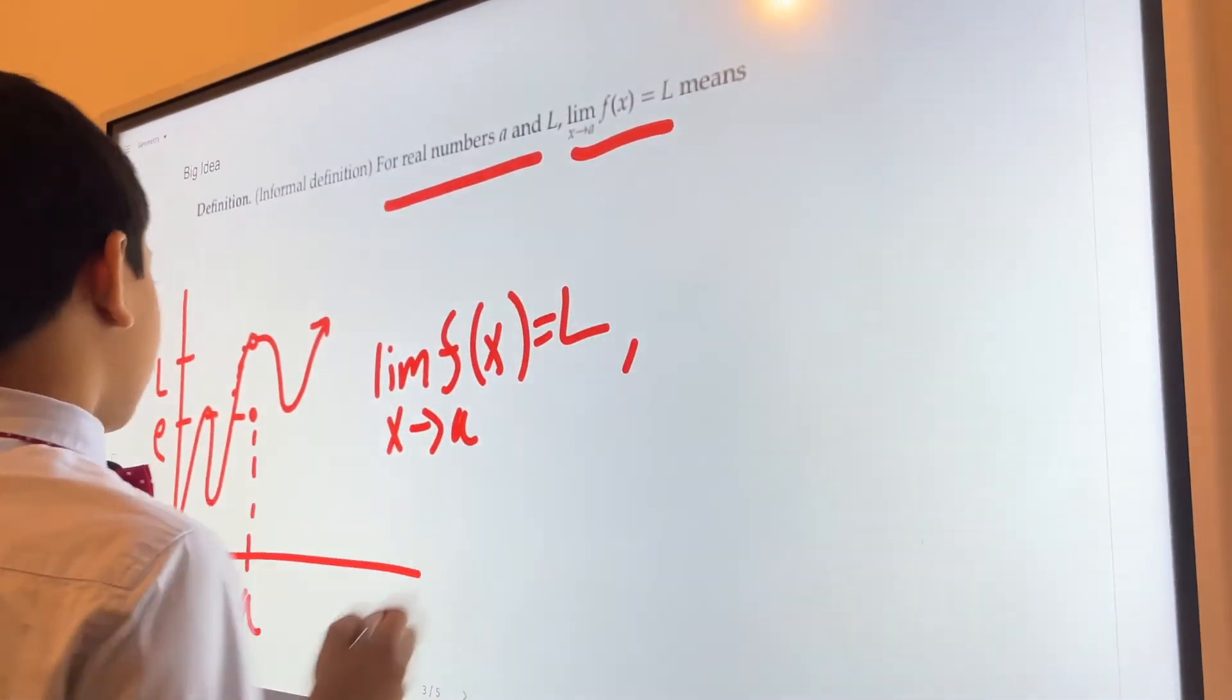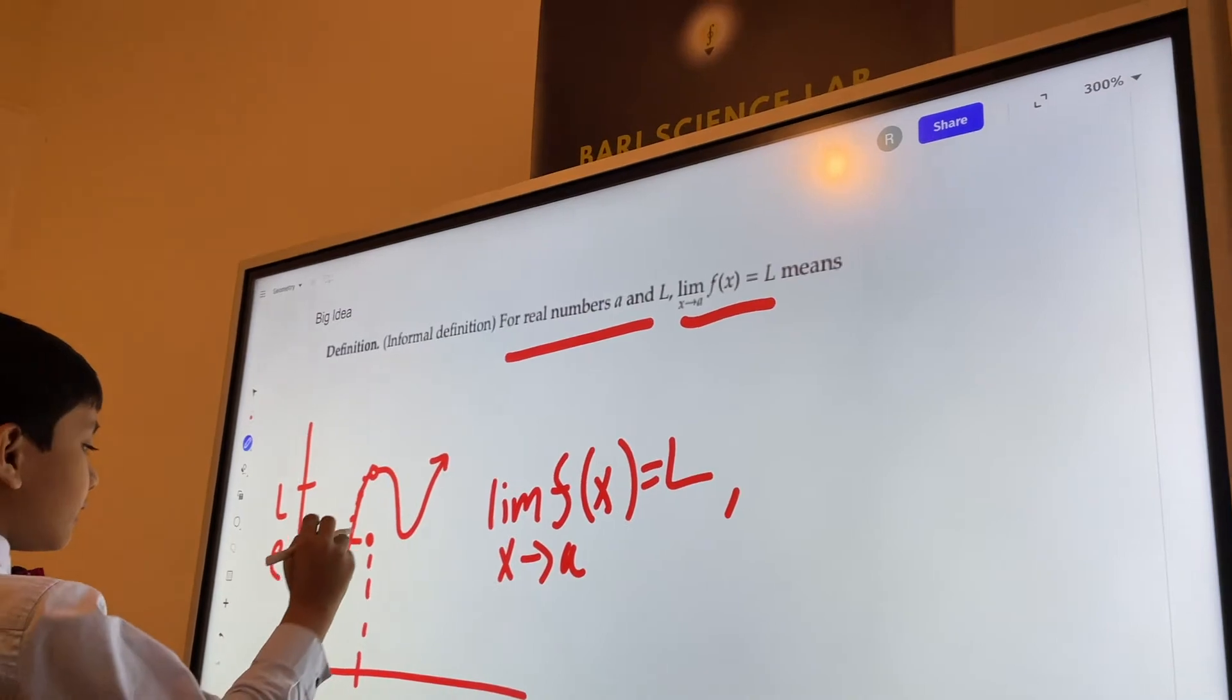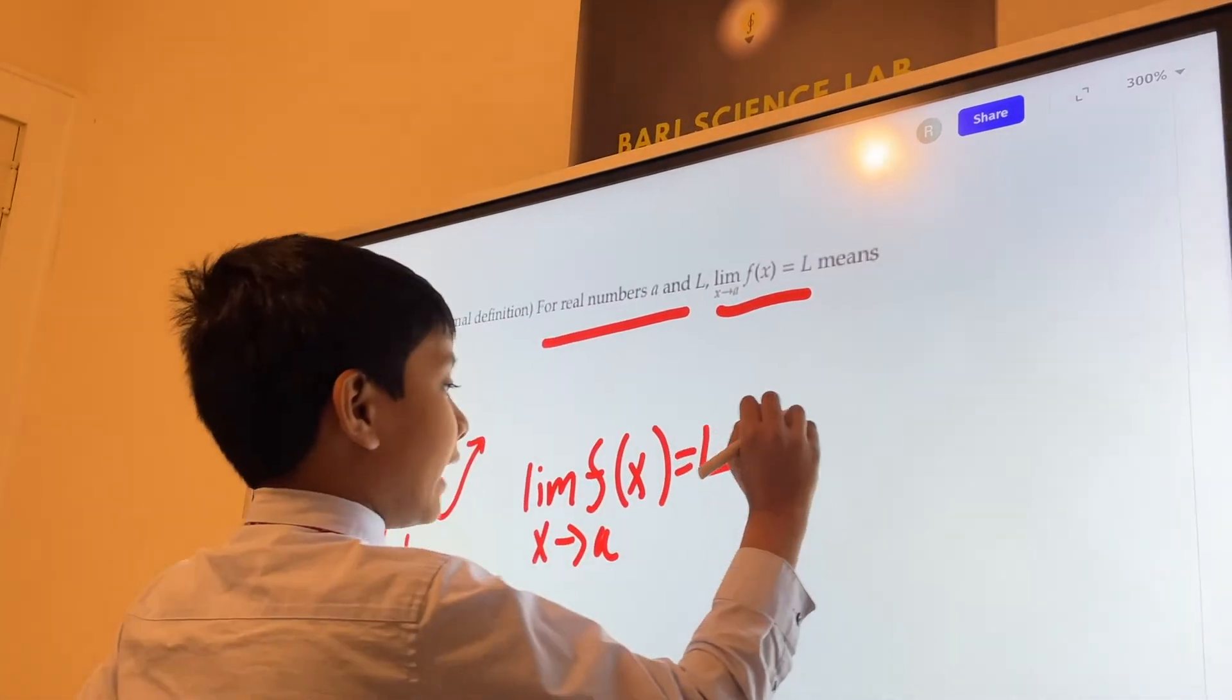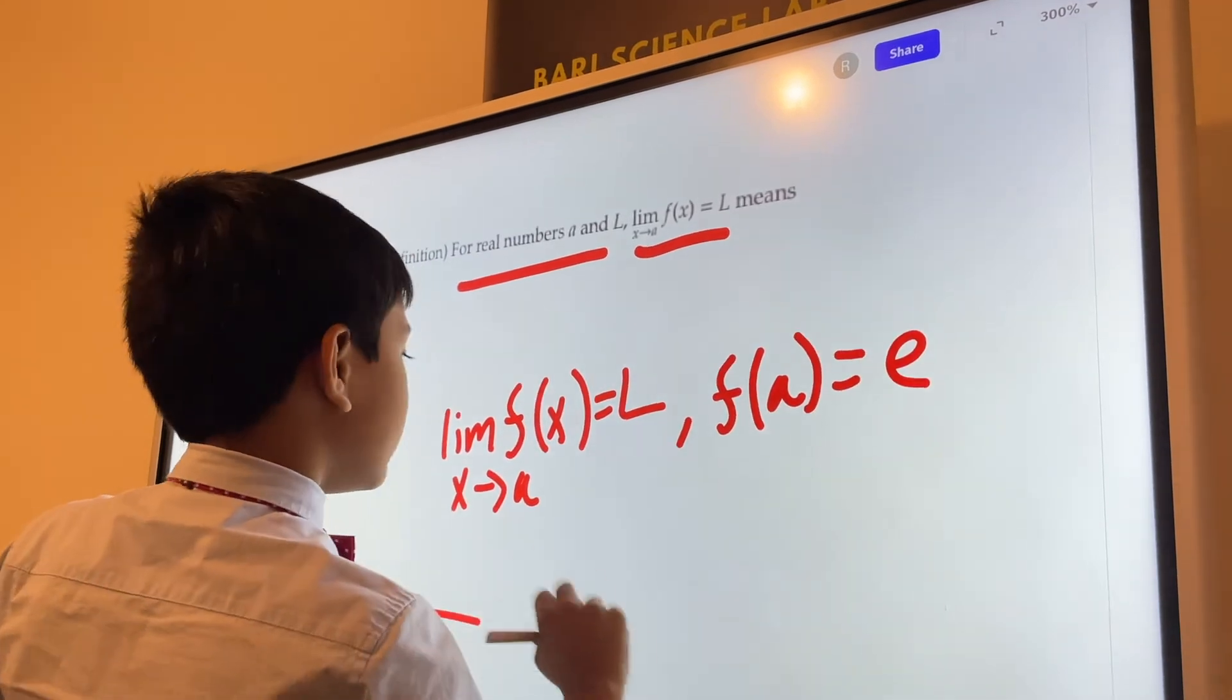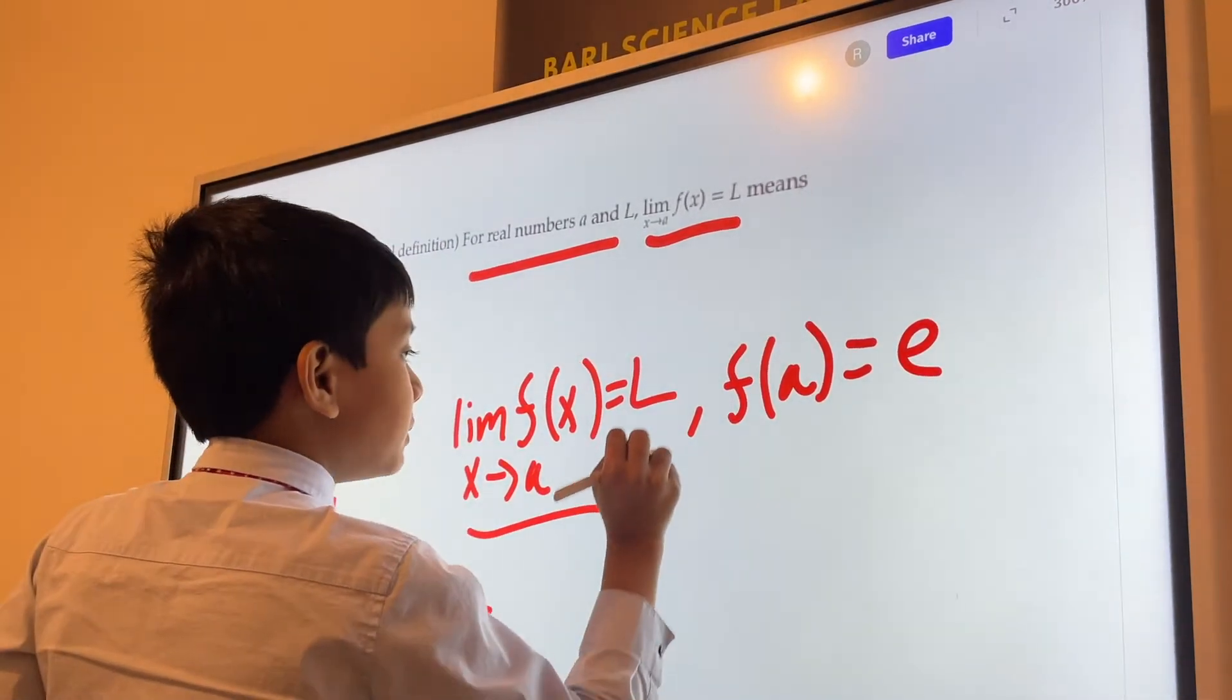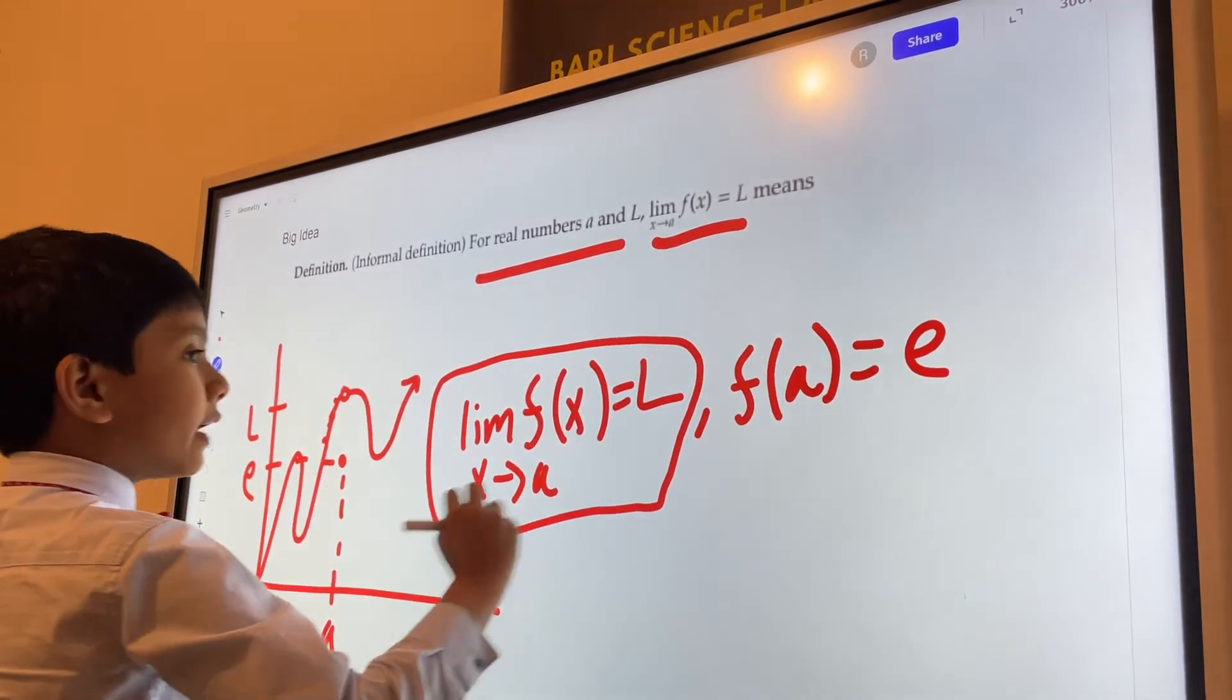we can also write that f of a is actually equal to e, thus distinguishing limits apart from just plugging and chugging.